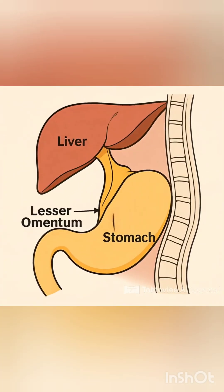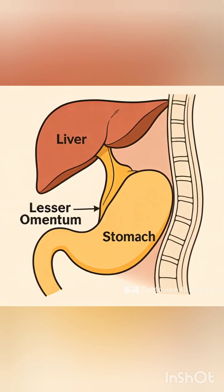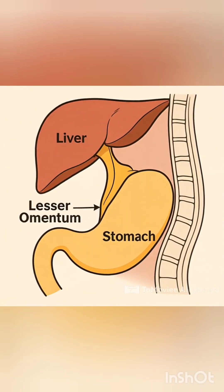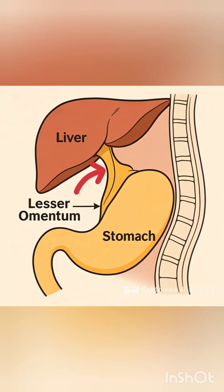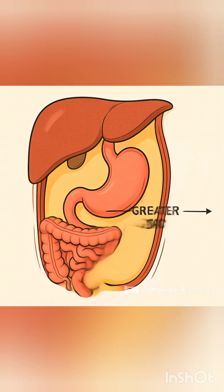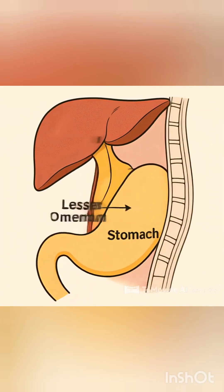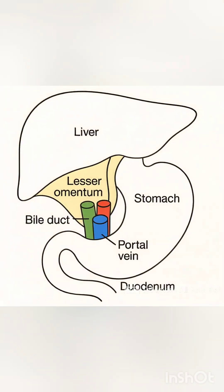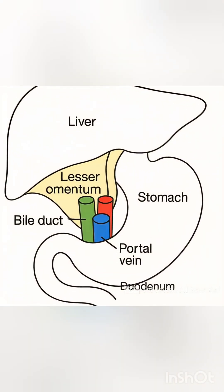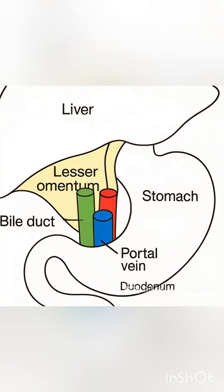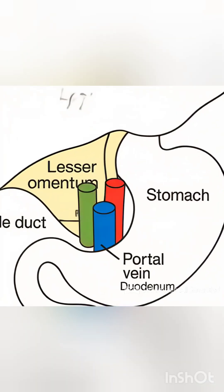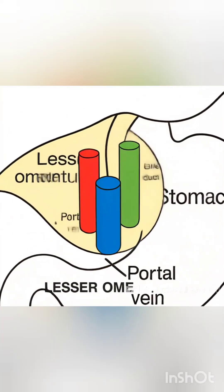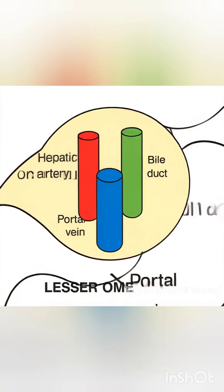The lesser omentum extends from the lesser curvature of the stomach and beginning of the duodenum to the liver. The lesser omentum contains the hepatic artery, bile duct, and portal vein — these three structures are also known as the portal triad.